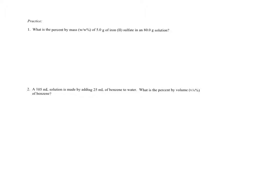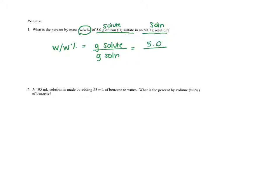Problem one: What is the percent by mass (w/w) of five grams of iron sulfate in an 80-gram solution? First, I'm solving for the w/w percent. I have five grams of iron sulfate in 80 grams of solution. The 80 grams is the solution, which means the iron sulfate is the solute. Generally, if they give you a formula or name of a compound, that's going to be the solute.